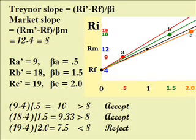And when we do that for A at 9, and the risk-free at 4, divided by half its slope is 10. And that's greater than the slope of the market, which again accepts it.